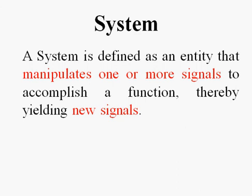I can now define the system. A system is defined as an entity that manipulates one or more signals to accomplish a function, thereby yielding new signals. So, this is how I formally define a system.